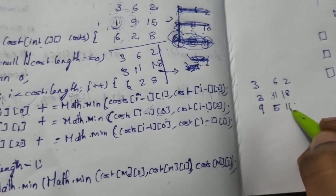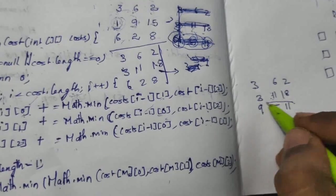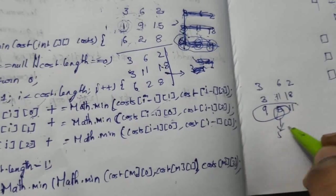8 plus 3 is 11. So minimum of these 3 would be 5. So our answer is 5.